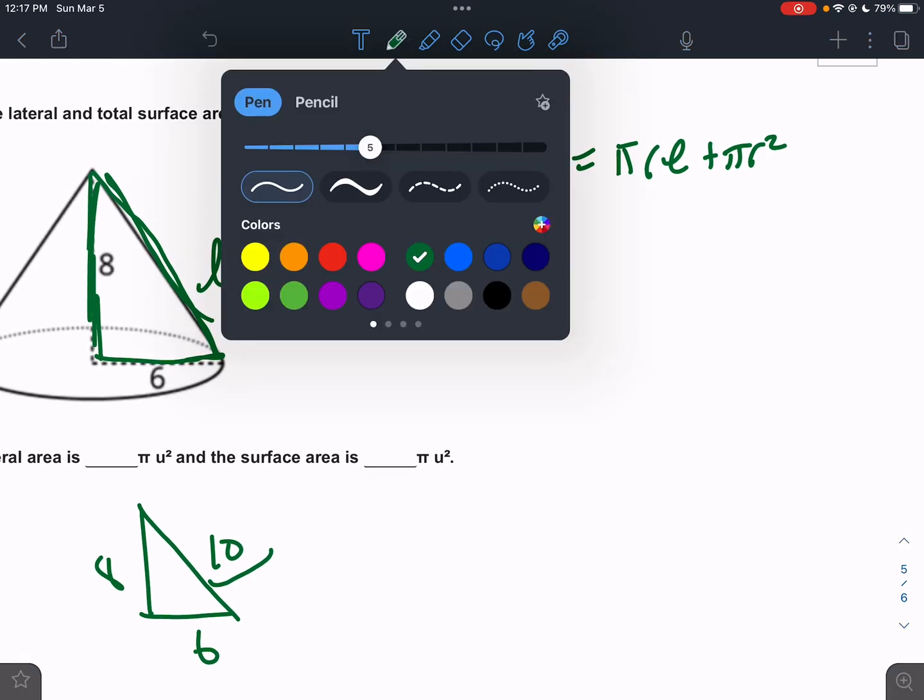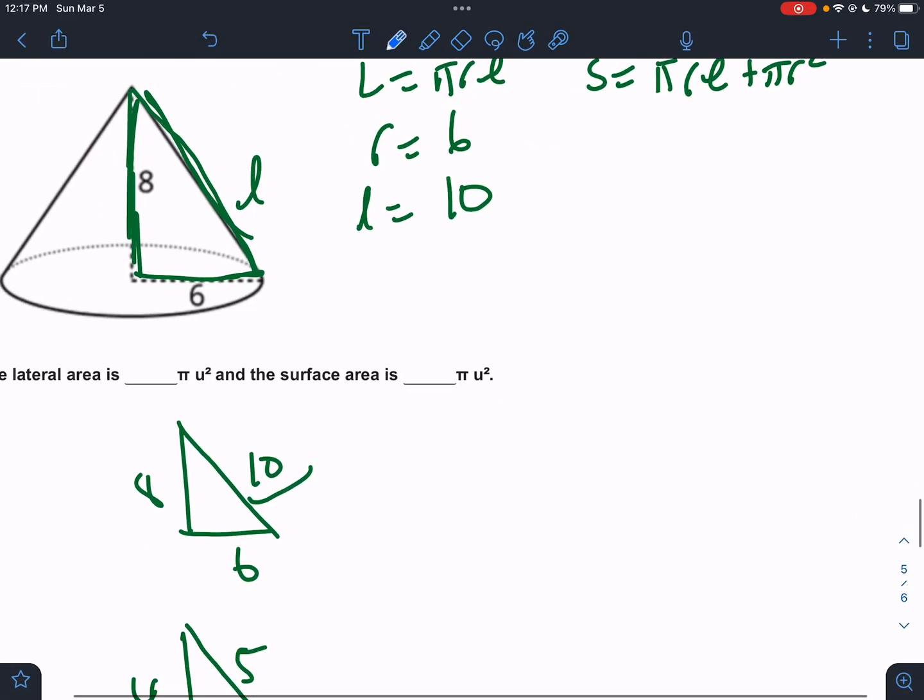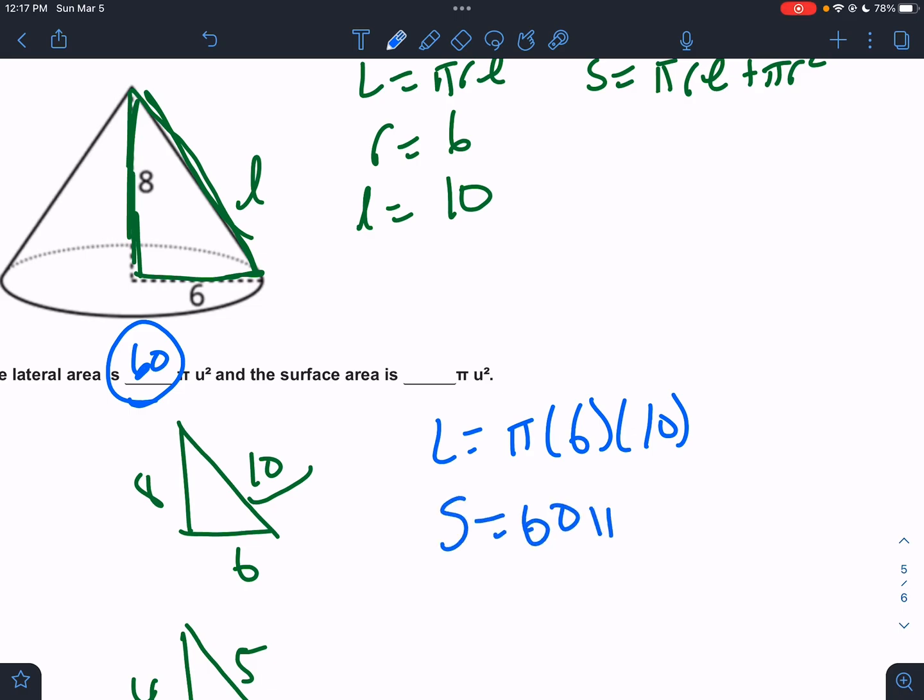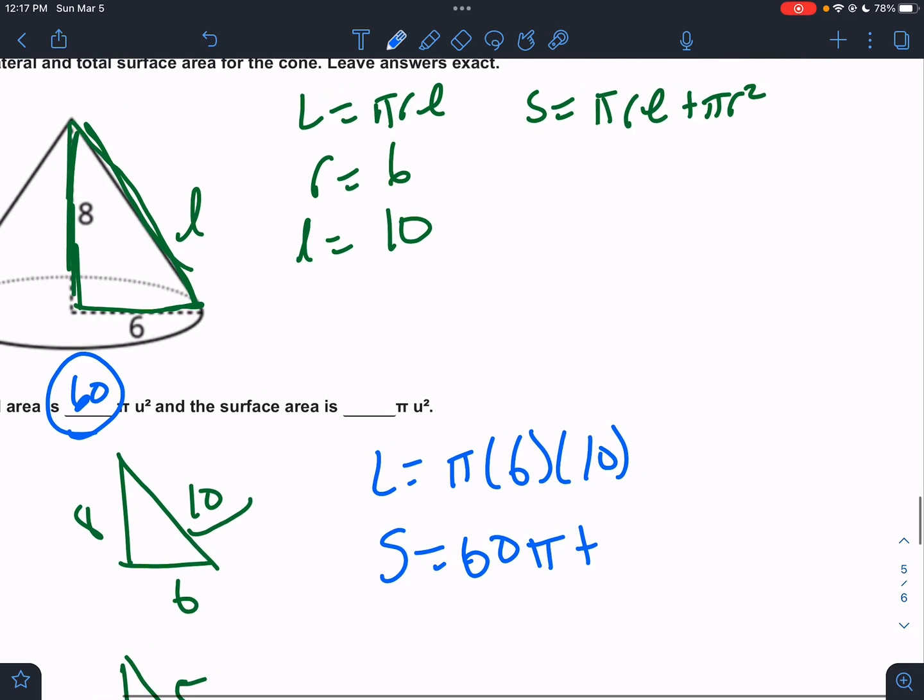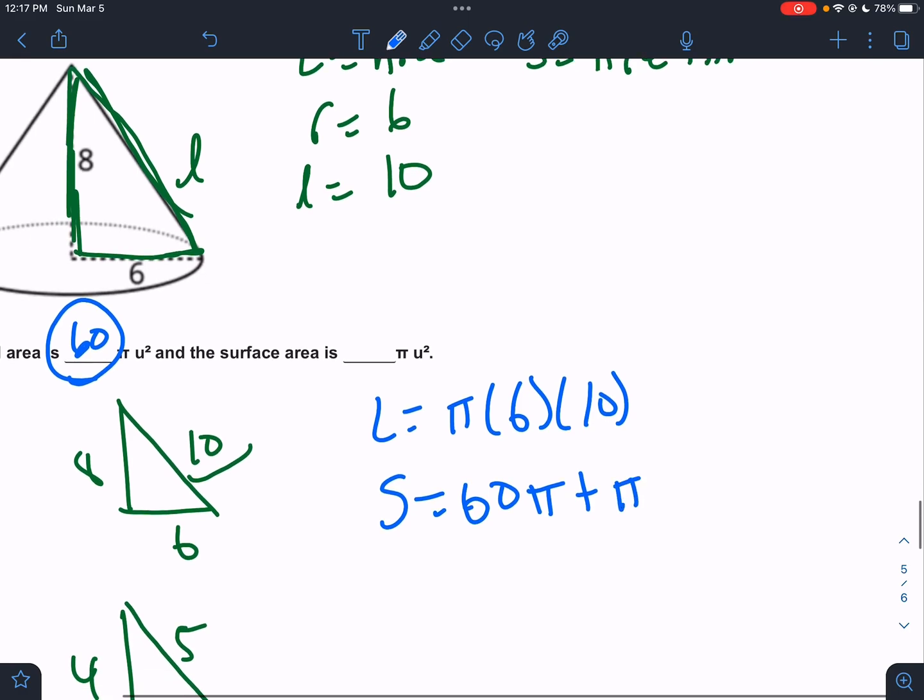So let's do our two situations. We have a lateral that is π times 6 times 10, which is 60π. And we have a total, which is 60π. That's the lateral we just got. Plus one base would be π times r squared. So that would be 60π plus 36π, clocking in at 96π.